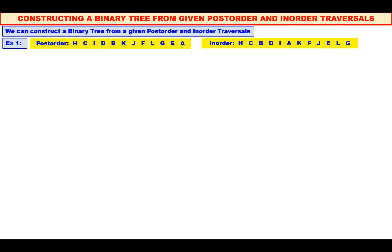And also we know in-order: first the left sub-tree is processed, then the root is processed, then the right sub-tree is processed. Now, carefully observe the post-order. What is the last element in the post-order? A — meaning A should be the root of the tree.